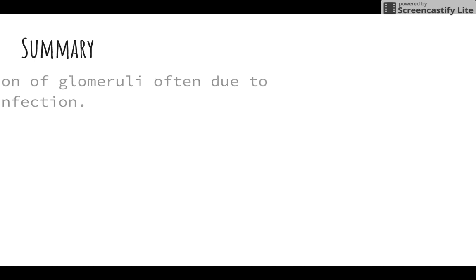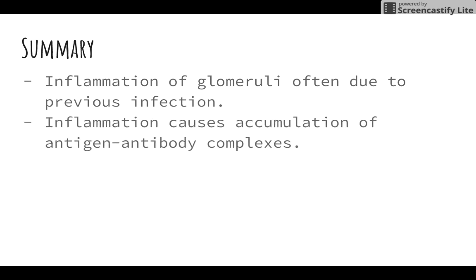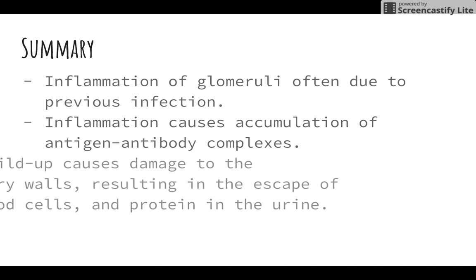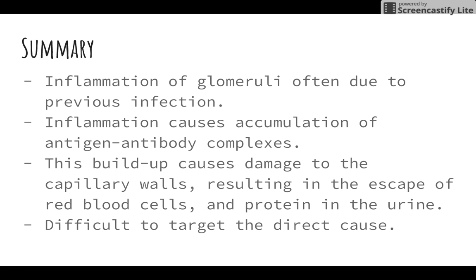In summary, acute glomerulonephritis is the inflammation of the glomeruli, often due to a previous infection. Inflammation is an immune response that occurs when an accumulation of antigen-antibody complexes signal inflammatory cells and leukocytes. This buildup in the membrane obstructs the glomerular capillary lumen and damages the capillary walls, preventing proper filtration of the blood, which results in the escape of red blood cells and protein in the urine. It's difficult to target the cause of this disease, as it is usually the result of multiple causative agents, including immunologic, non-immunologic, and hereditary.